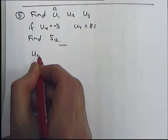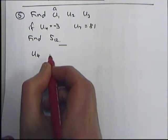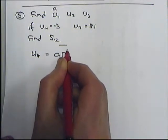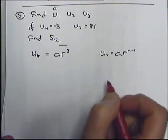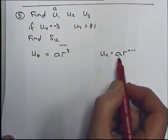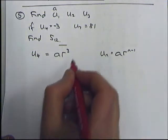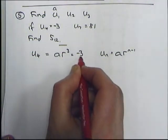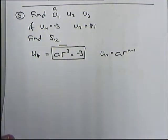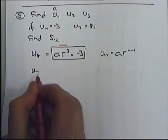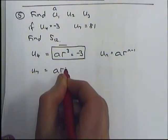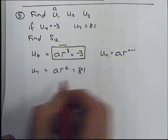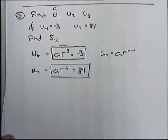We know that U4 is minus 3. U4 is A times R to the power of 3, using the formula U_n = AR^(n-1). So the fourth term is AR to the power of 3, and that equals minus 3. Similarly, the seventh term is A times R to the power of 6, and that equals 81. I'll call these equation 1 and equation 2.